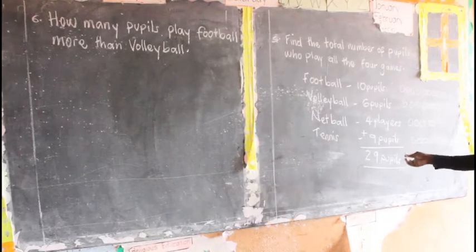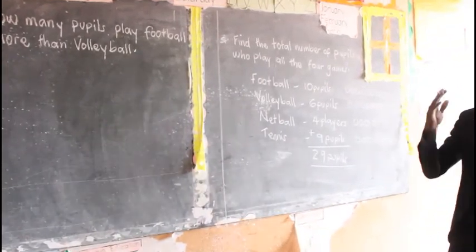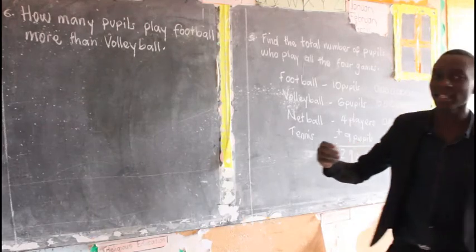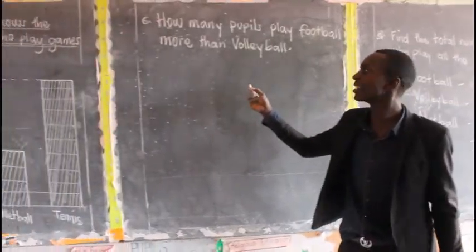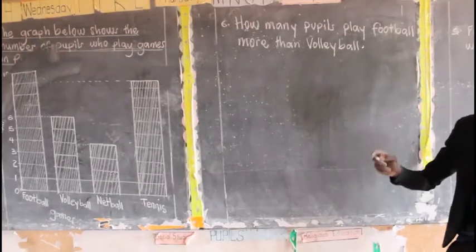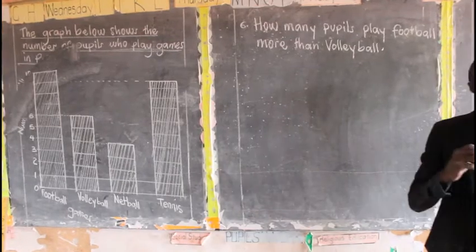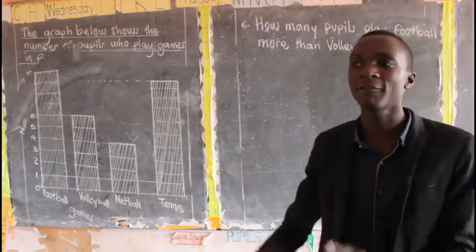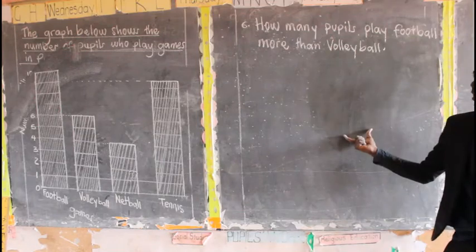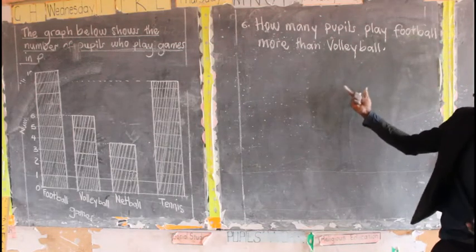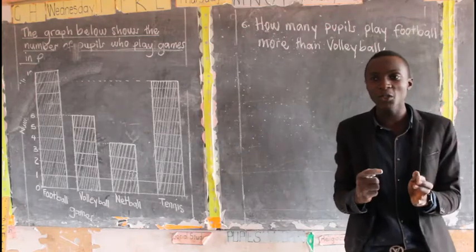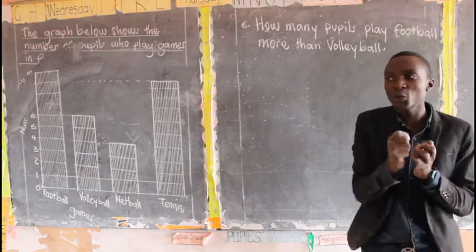From our graph, we have seen that there are 29 players who play all the four games provided in primary three. Now we are going to look at our last question: how many more people play football than volleyball? This question means we are going to get the total number of people who play football and those who play volleyball, then find the difference — because the question asks 'how many more,' we need to subtract.